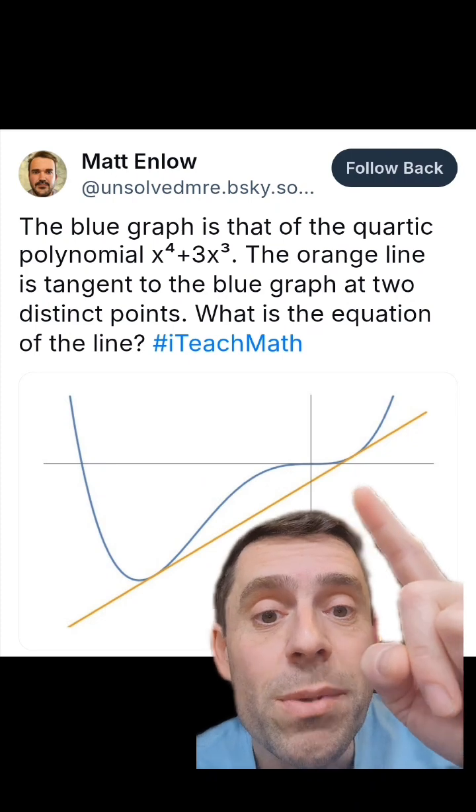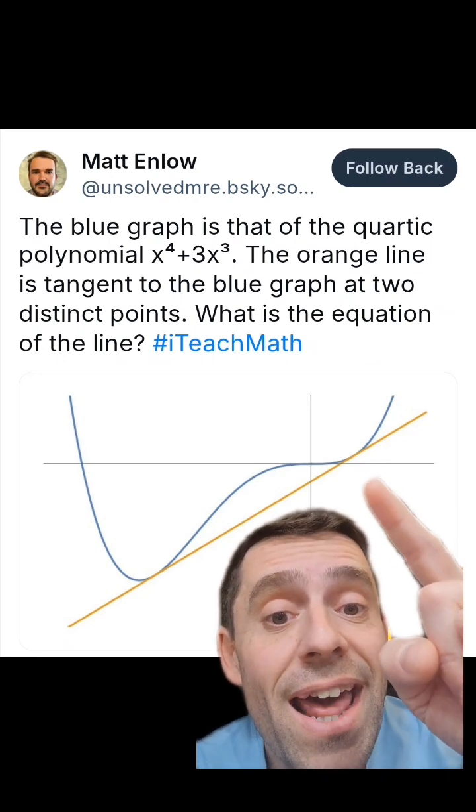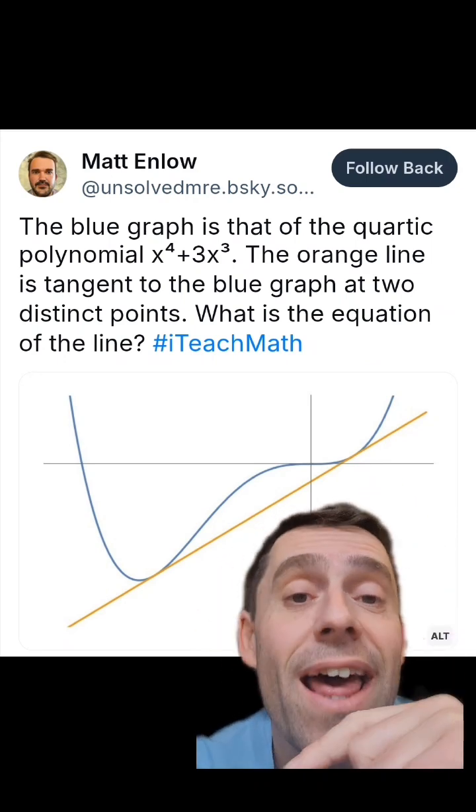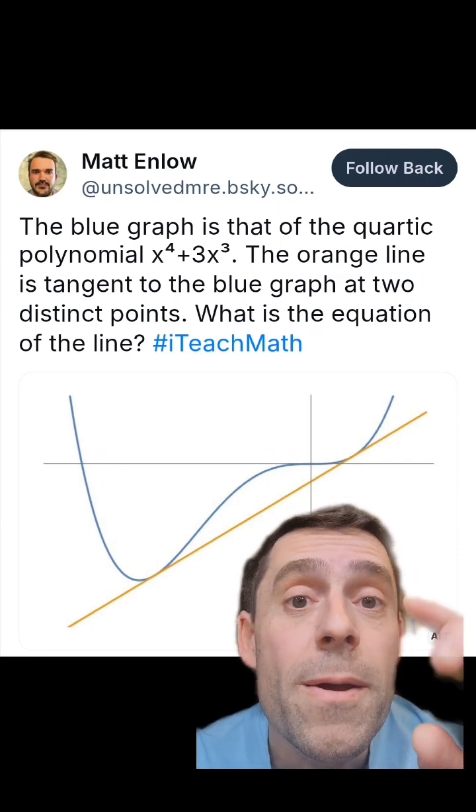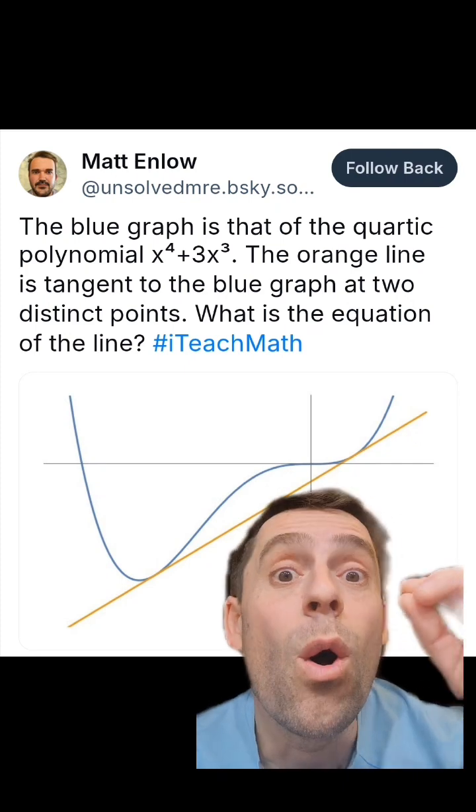But in fact, because the yellow line or the orange line was tangent, that has to be a double zero and that has to be a double zero as well. So this new quartic polynomial has to be a square of a quadratic.